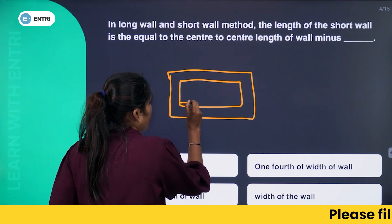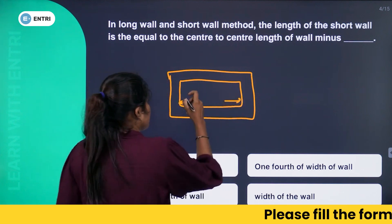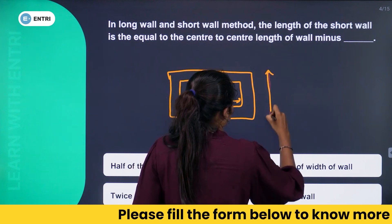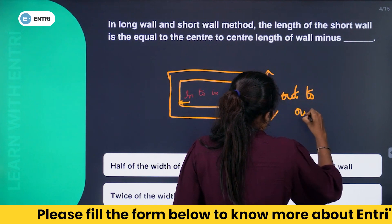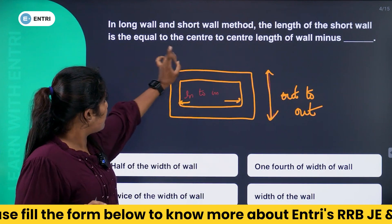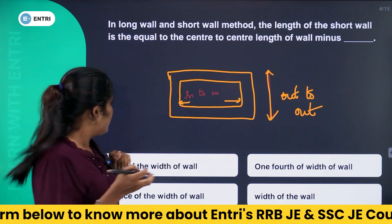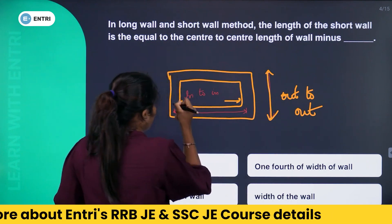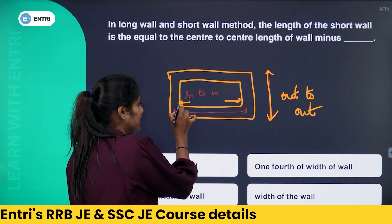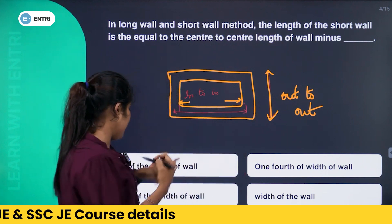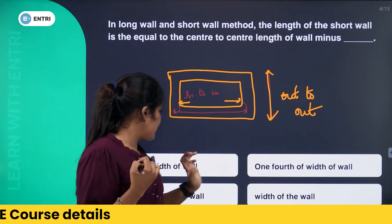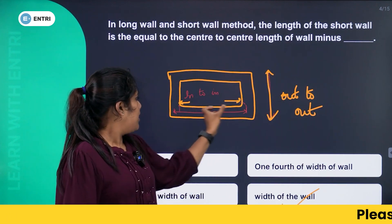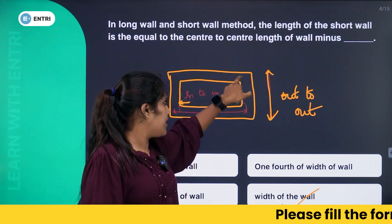For the short wall, we are looking at the in-to-in distance — that is the exact distance. For the long wall, we look at the out-to-out distance. The in-to-in distance is equal to the center length of the wall. To get the in-to-in distance of the short wall, we subtract half the width of the wall from each side, giving us a total deduction of the full width of the wall. The answer is: width of the wall. In-to-in distance is for the short wall; long wall is out-to-out, so we add the center-to-center distance.